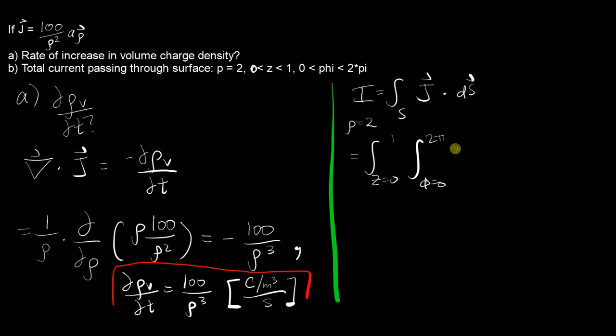So you'll get 100 over rho squared a_rho dotted with whatever's in the a_rho direction, so that would have to be rho dz d_phi in the rho direction like that.